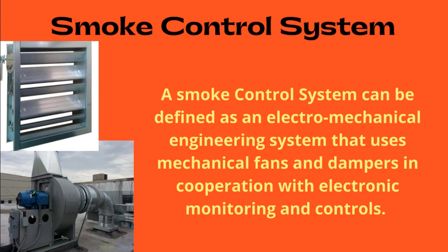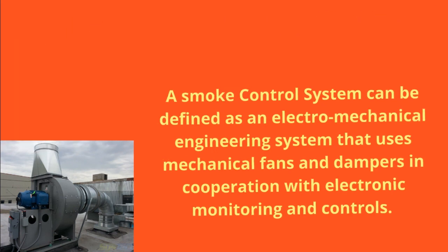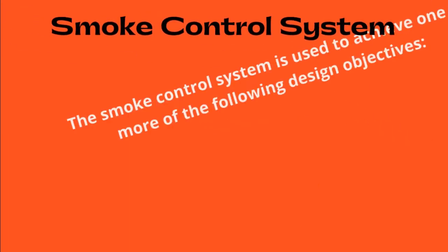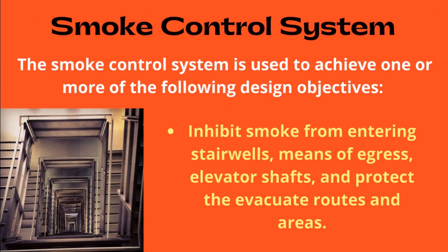A smoke control system can be defined as an electromechanical engineering system that uses mechanical fans and dampers in cooperation with electronic monitoring and controls. The system produces pressure differences across smoke barriers that inhibit or facilitate smoke movement. The smoke control system is used to achieve design objectives such as inhibiting smoke from entering stairwells, means of egress, elevator shafts, and protecting evacuation routes and areas.